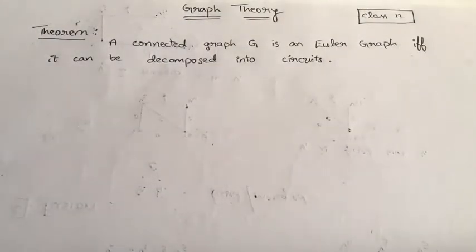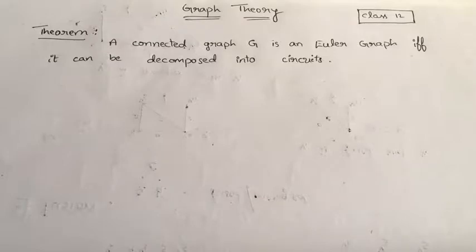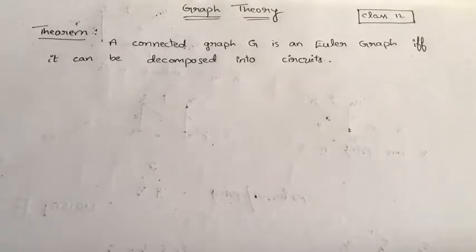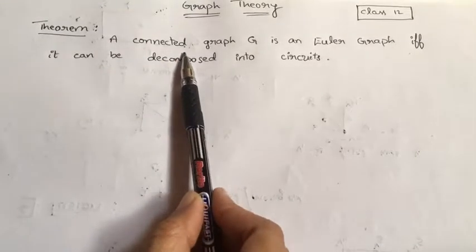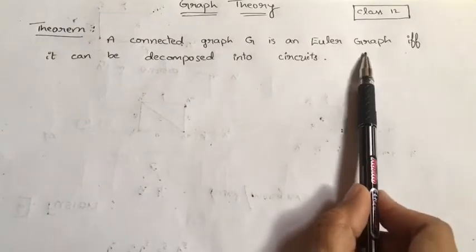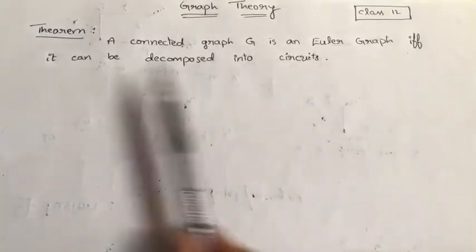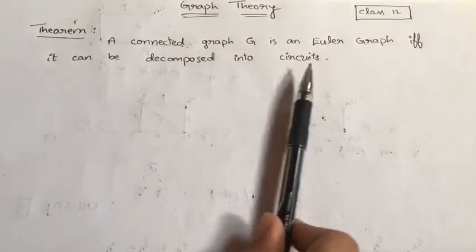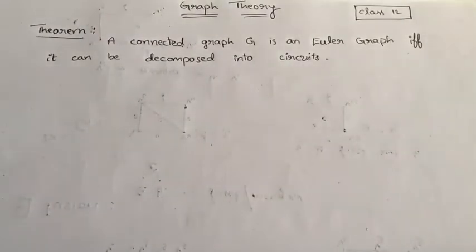In the last video we learned operations on graphs. Now based on this we are proving a theorem which states a connected graph G is an Euler graph if and only if it can be decomposed into circuits.